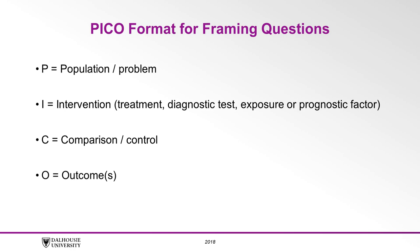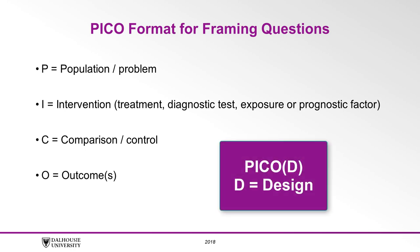You may want to know the effectiveness of a three-day course of antibiotics compared to a ten-day course, or you may be interested in knowing the five-year survival rate in a prognosis question. Both of these examples incorporate the element of time. Sometimes the acronym PICO-D is used, where D stands for a particular study design, such as randomized control trials or cohort studies, that would best answer the question you are asking.